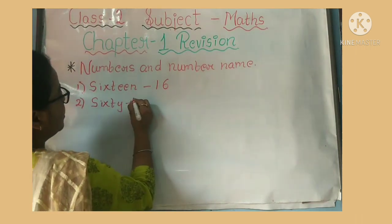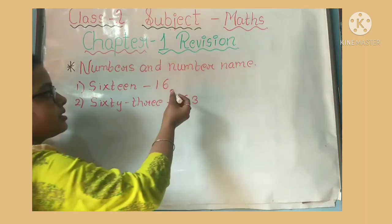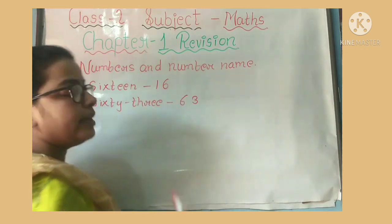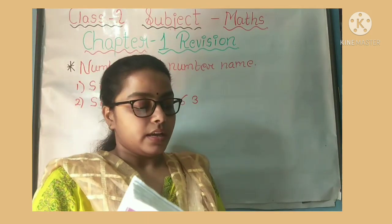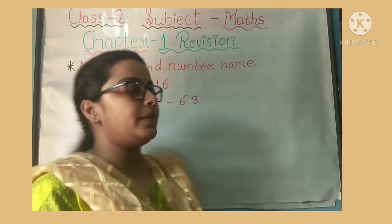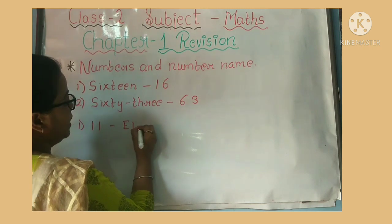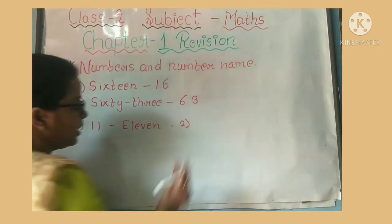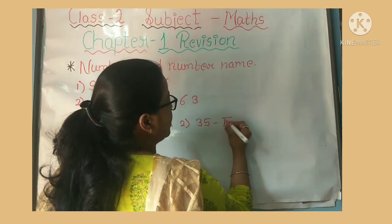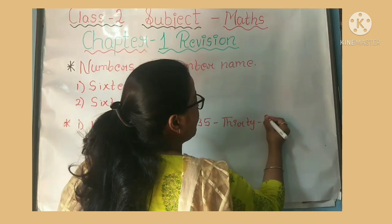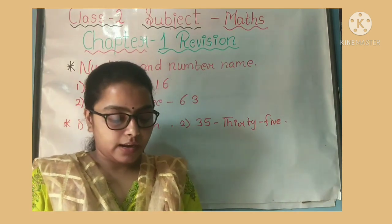Question number 2: 63. How do you write 63? Like this — 63. What you have to do: number names are given and you have to write the numbers. Now the second exercise: number is given and you have to write the number name. First: 11. Number 2: 35 is given. How do you spell thirty? 35 — F-I-V-E, 5. These two exercises you can do in your books.